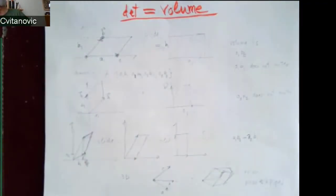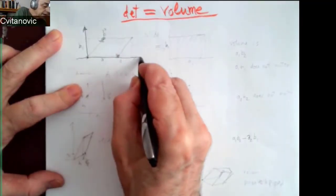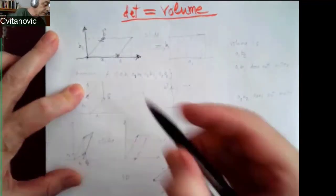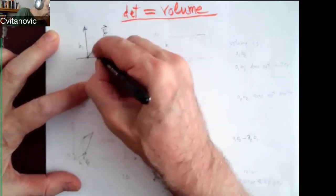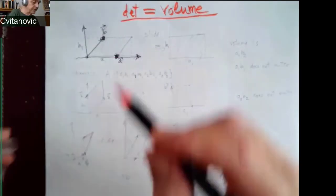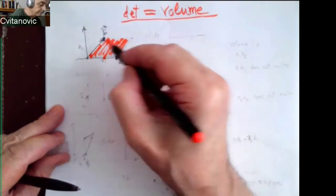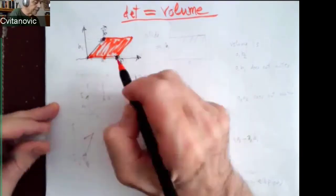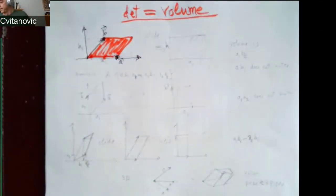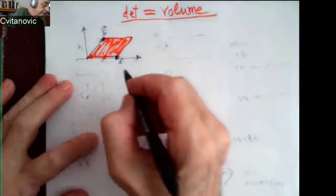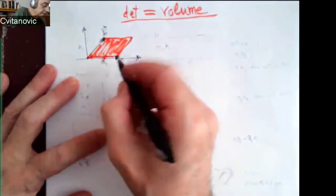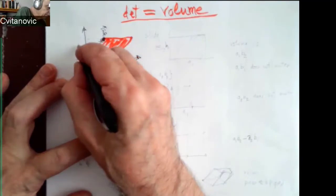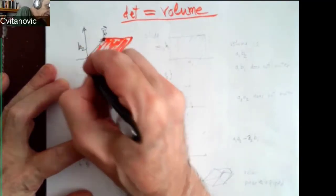So the intuition is very simple, but for some reason I don't see it on the internet. Look, let's look at the area of a parallelogram, which is volume in two dimensions. You give me two vectors, vector A and vector B. And you ask, what's the area of the parallelogram that I span? Well, that's pretty obvious. A has two components. A1 along x direction, A2 along two directions, that's zero. This guy has two components. This guy has two components.